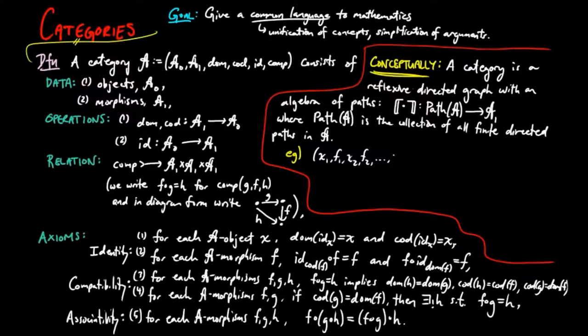For example, if X1, F1 to Fn, X N plus 1 is a path, then there is a unique arrow which has domain X1 and codomain X N plus 1.